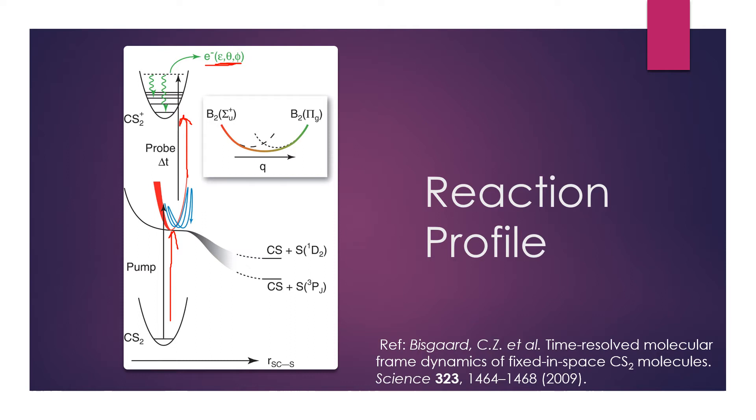The development of the molecule along the reaction coordinate involves manipulation of the vibrational character. As the molecule proceeds towards dissociation, it gains πg character, indicated in this graph by the general vibrational coordinate q increasing.